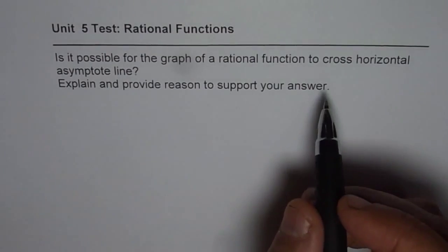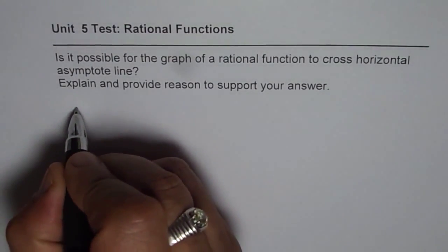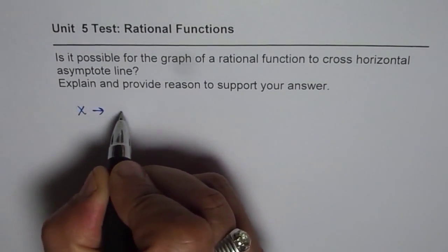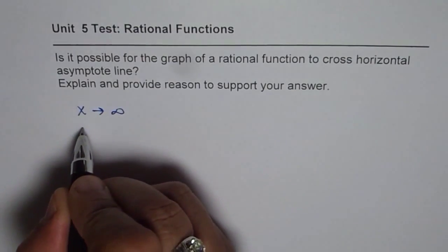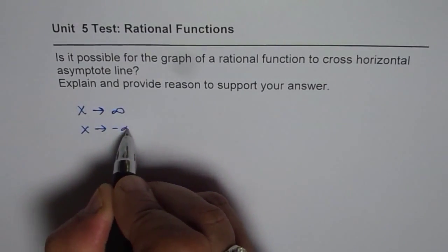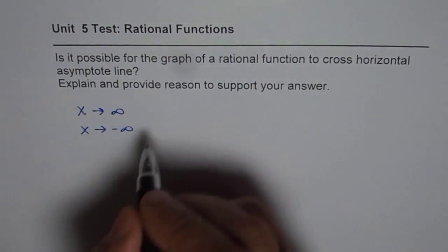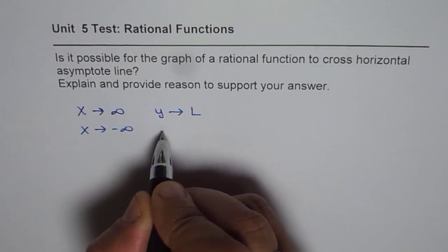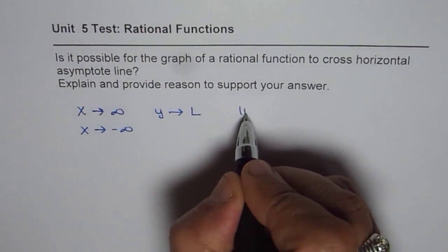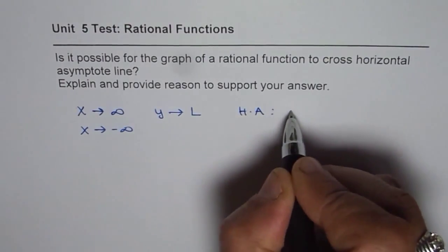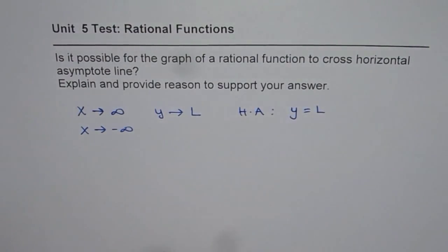Well, as you know, horizontal asymptote is behavior of the graph when x approaches positive infinity or when x approaches negative infinity. If at that time, if y approaches a value L, for example, in that case we have a horizontal asymptote whose equation is y equals to L.